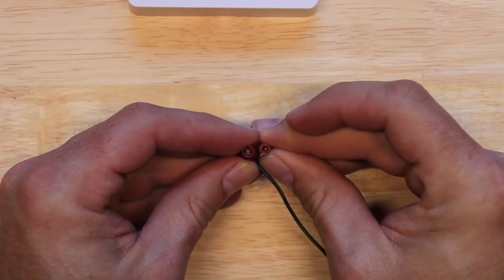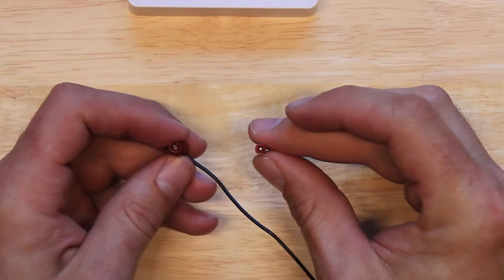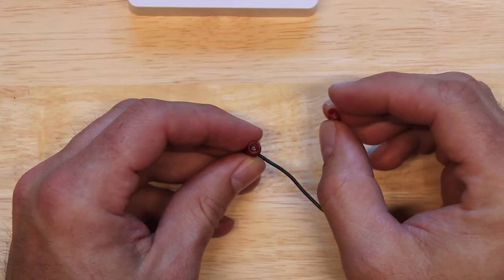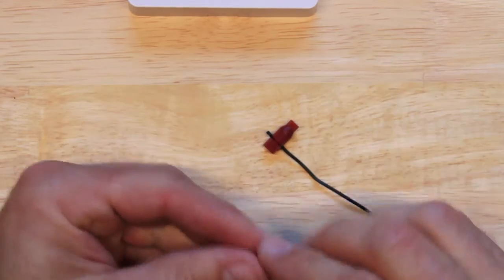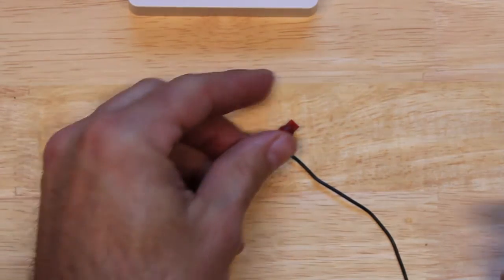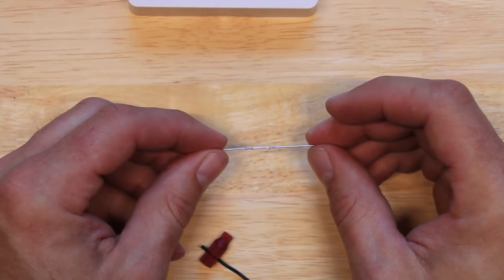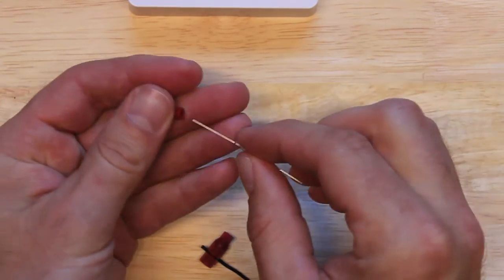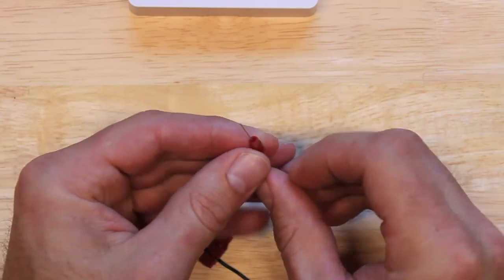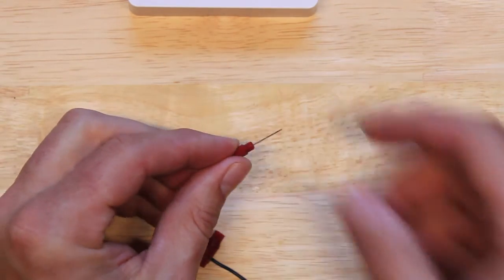So on this side of the tap connector I'm going to be putting the reed sensor. The right side there is a collar that sleeves over the lead of the sensor.